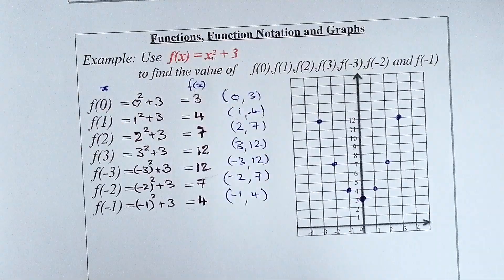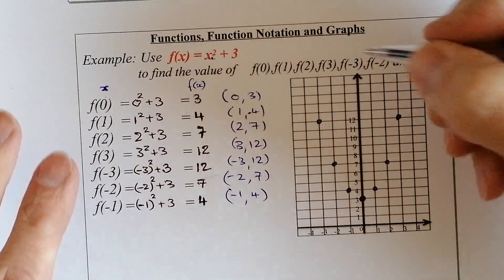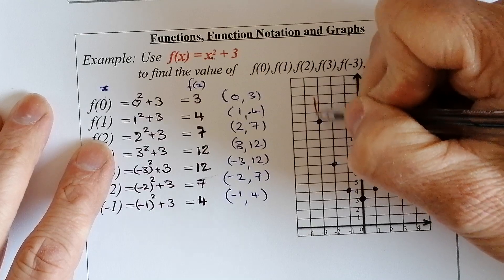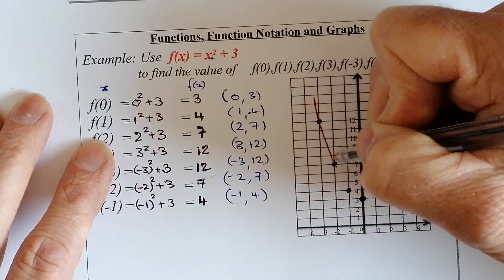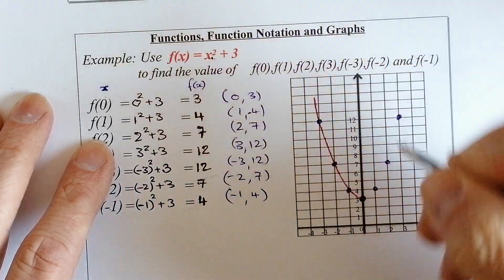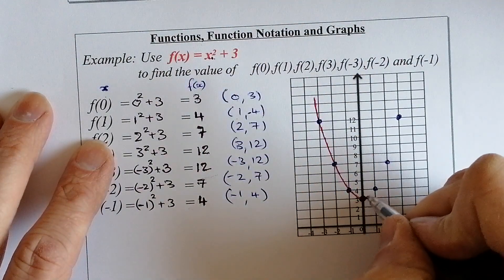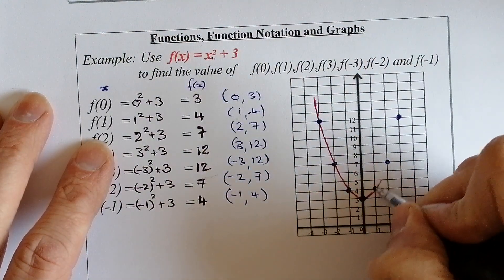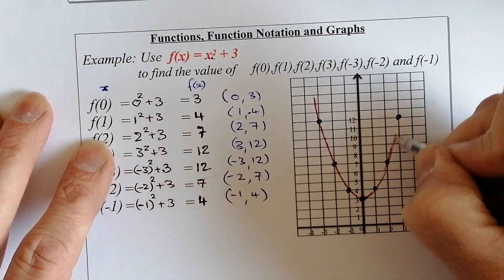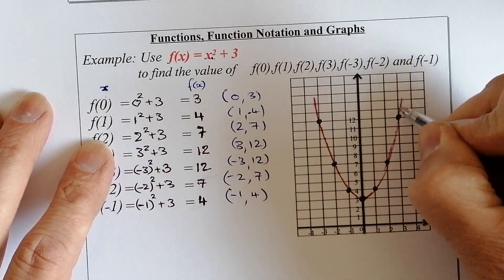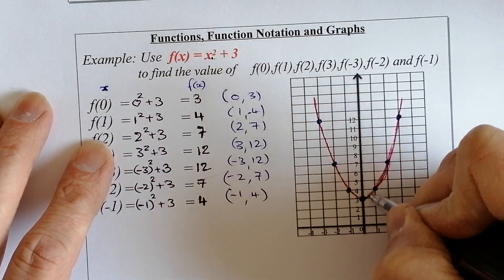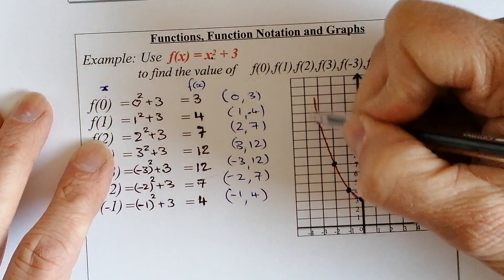I'll draw a smooth curve through the points, starting from the top left, coming down to the bottom turning point, then back up through the right side. That's my graph.